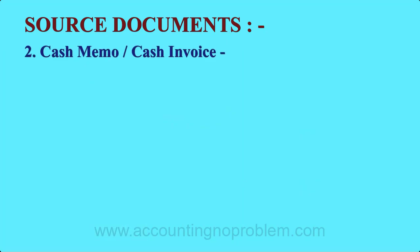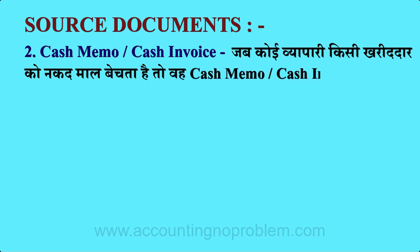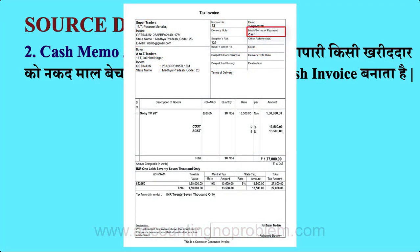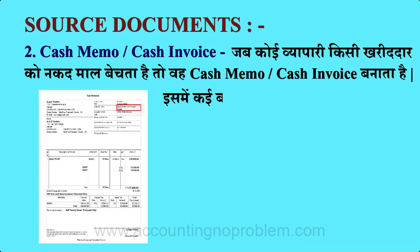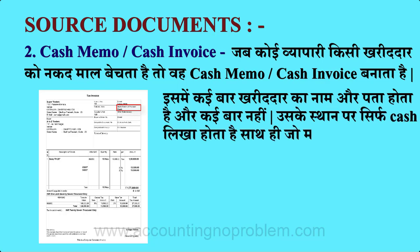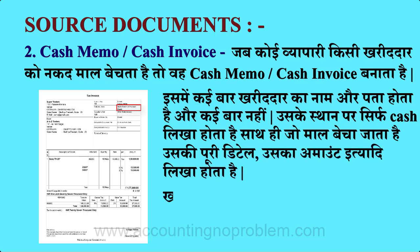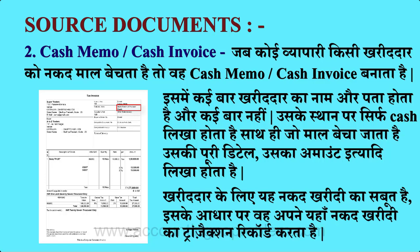दूसरा है Cash Memo या Cash Invoice। जब कोई व्यापारी किसी खरीदार को नकद माल बेचता है तो वो Cash Memo या Cash Invoice बनाता है। नमूने के लिए हम आपको एक Cash Memo दिखा रहे हैं। इसमें कई बार खरीदार का नाम और पता होता है और कई बार नहीं; उसके स्थान पर सिर्फ Cash लिखा होता है। साथ ही जो माल बेचा जाता है उसकी पूरी detail और Amount इत्यादि लिखा होता है। खरीदार के लिए ये नकद खरीदी का सबूत है और इसके आधार पर वो अपने यहाँ नकद खरीदी का Transaction Record करता है।